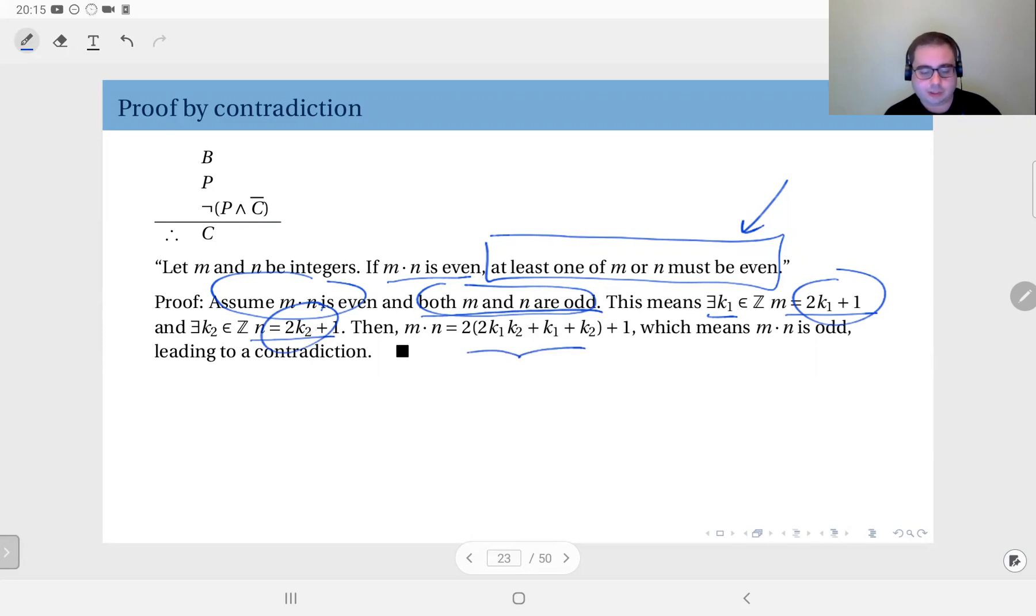Then to obtain m times n, multiply these two expressions. That gives you 4k1k2 plus 2k1 plus 2k2 plus 1, which you can group as 2(2k1k2 plus k1 plus k2) plus 1. This here is an integer, and m times n clearly is 2 times some integer plus 1, which means it's an odd number.